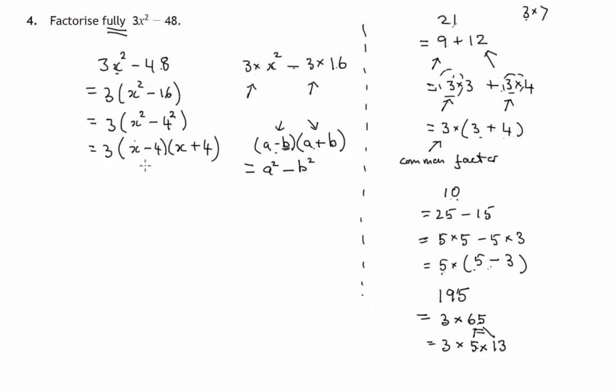We can check: first, x times x is x². The outsides give us 4x, the insides give us negative 4x which cancels out. The lasts give us negative 4 times 4, which is negative 16, or minus 4².